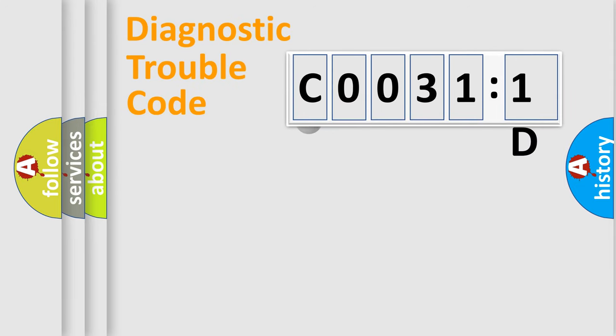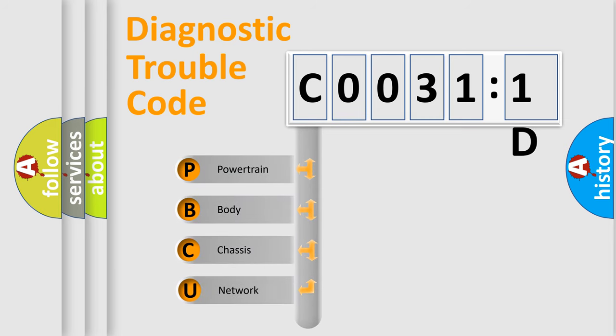First, let's look at the history of diagnostic fault code composition according to the OBD2 protocol, which is unified for all automakers since 2000. We divide the electric system of automobiles into four basic units.